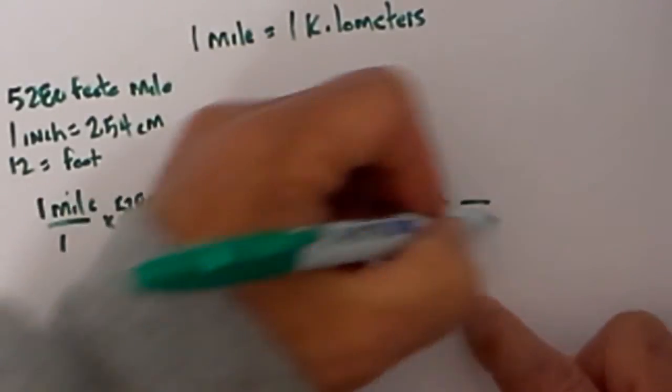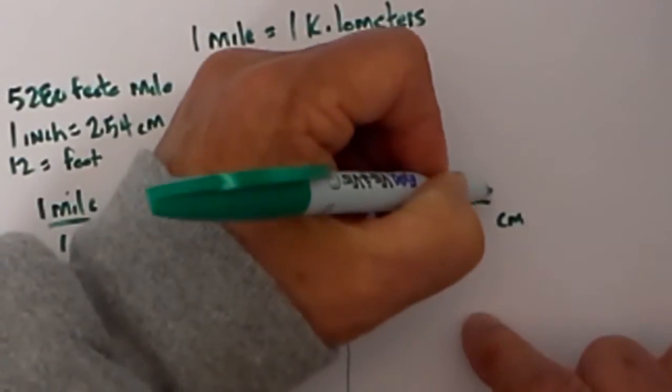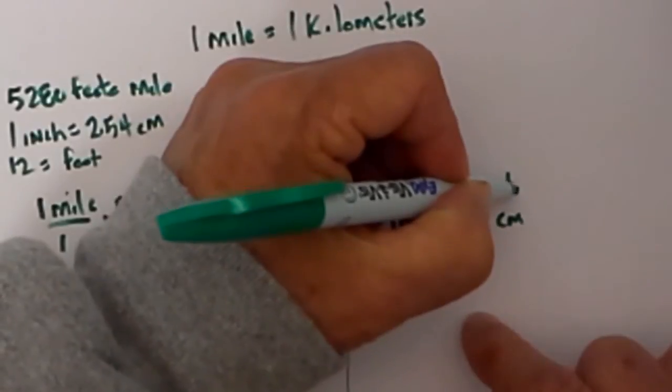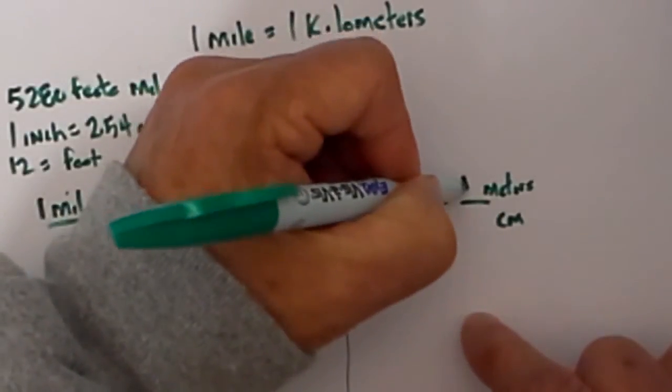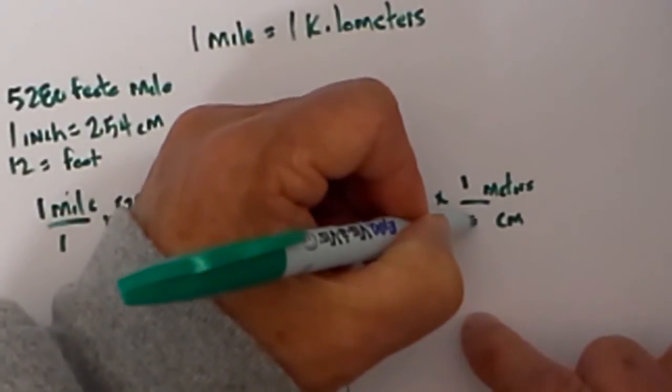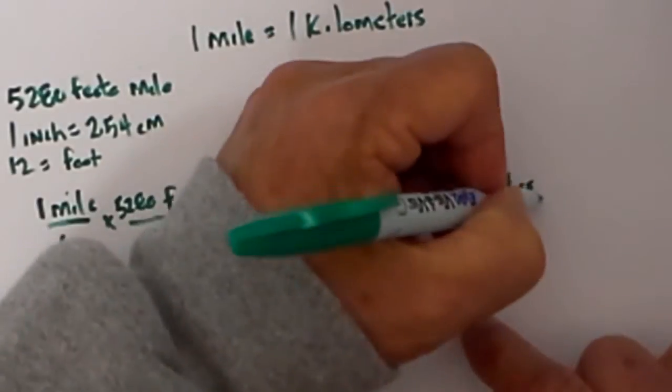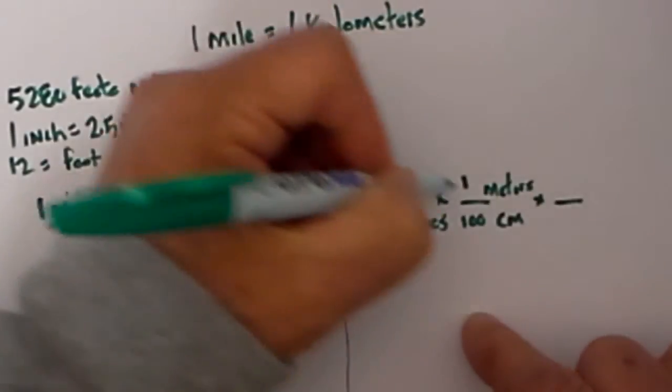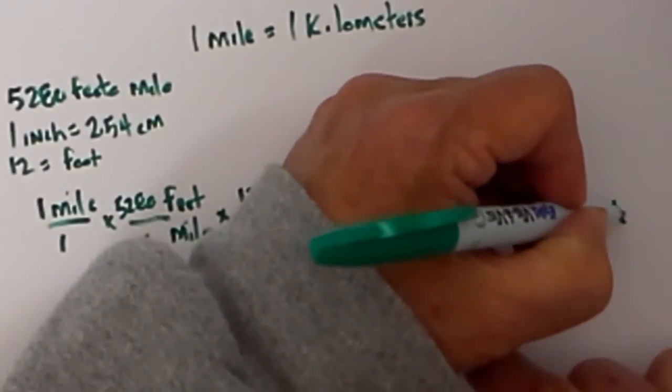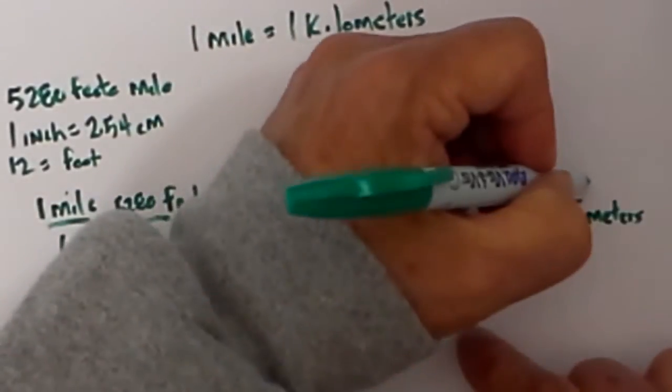I am then going to go from centimeters to meters so I will put meters on top and meters are larger than centimeters. 1 meter equals 100 cm, centi meaning 100 and finally meters to kilometers. I place meters on the bottom, kilo meaning 1 kilometer is equal to 1,000 meters.